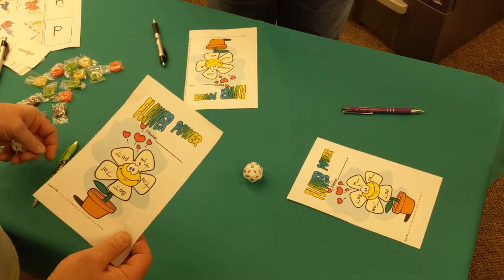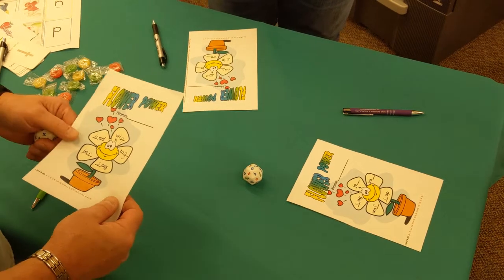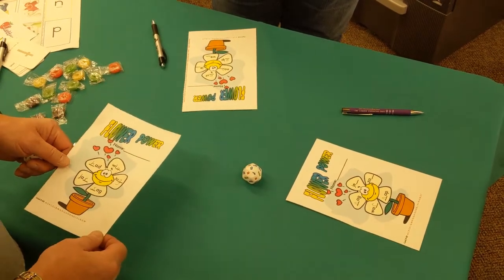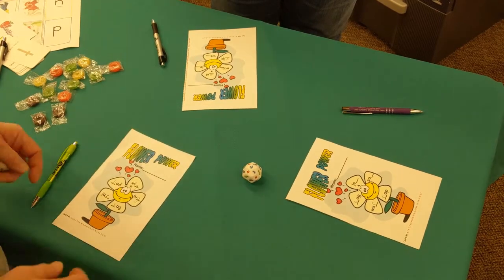And like I said, I think there's 80 or 90 different sheets. So no child will have the same sheet for quite a while. And that is flower power. Thank you. Come back. And we're going to do match attack next.